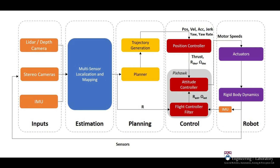This diagram shows the autonomous flight system developed in our lab. Due to the lack of reliability and accuracy for GPS in cluttered environments, such as under forest canopy, our robot relies only on onboard sensing.